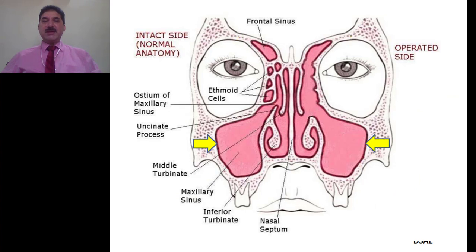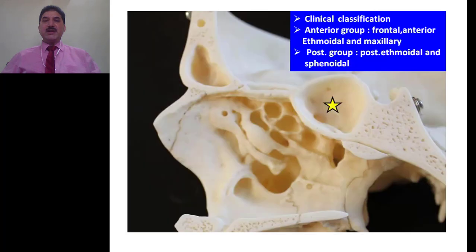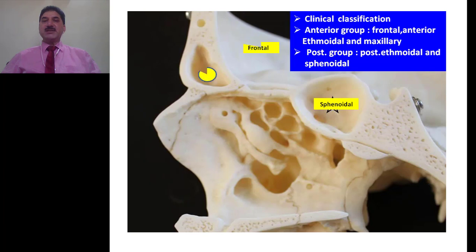For example, the maxillary air sinus lies within the body of the maxilla. Frontal air sinuses lie within the frontal bone. Ethmoidal air sinuses lie within the ethmoid, and sphenoidal air sinus lies within the body of the sphenoid, as shown in this figure. Clinically, these sinuses are classified into two groups: the anterior group, which includes frontal, anterior ethmoidal, and maxillary air sinus; and the posterior group, which includes posterior ethmoidal and sphenoidal air sinus.